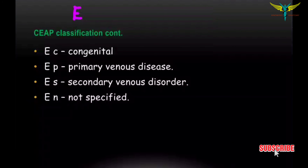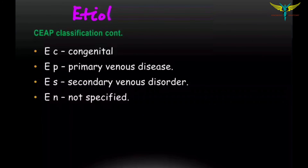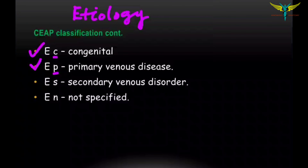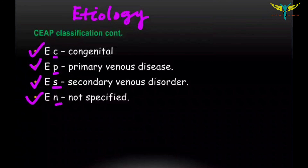The second component is etiology. In this, C stands for congenital, P for primary venous disease, S for secondary venous disorder, and N for not specified.